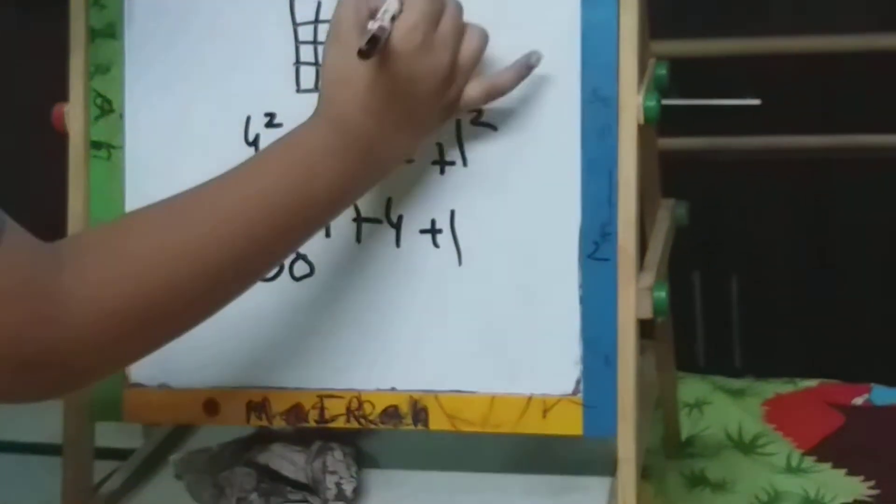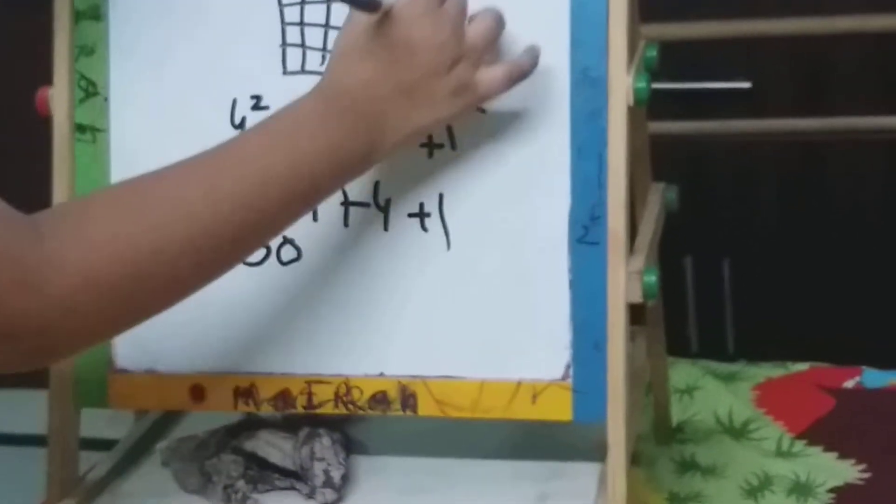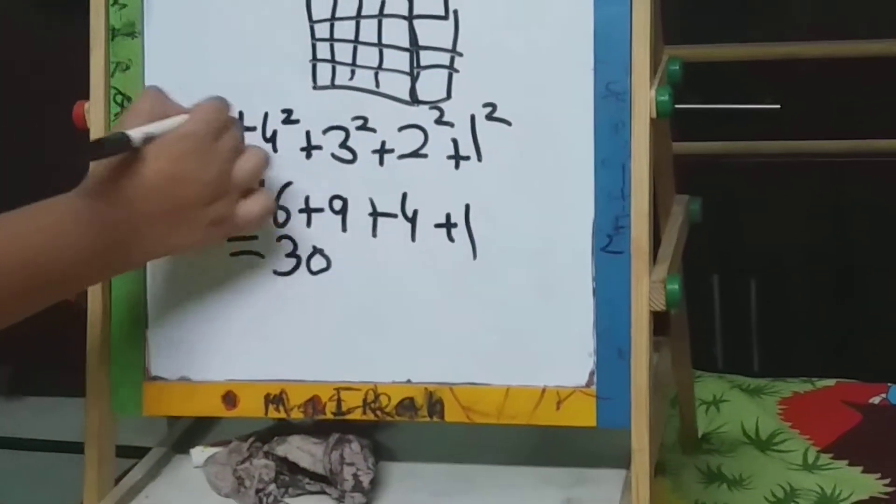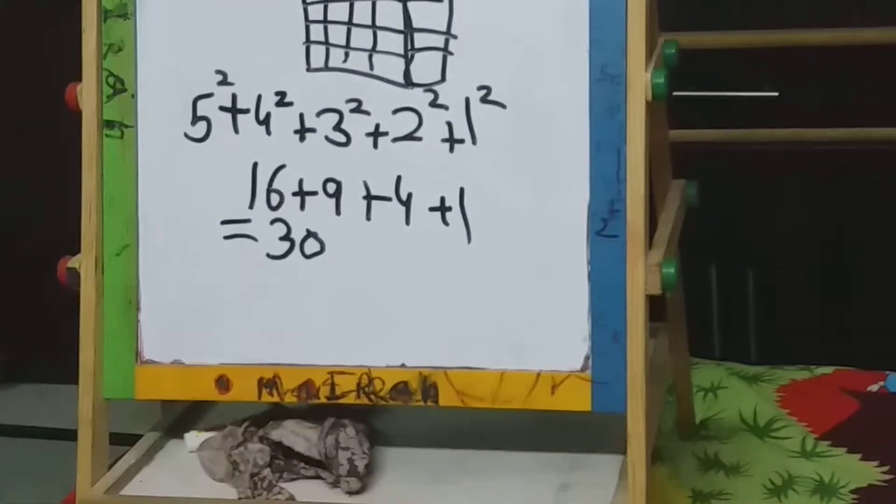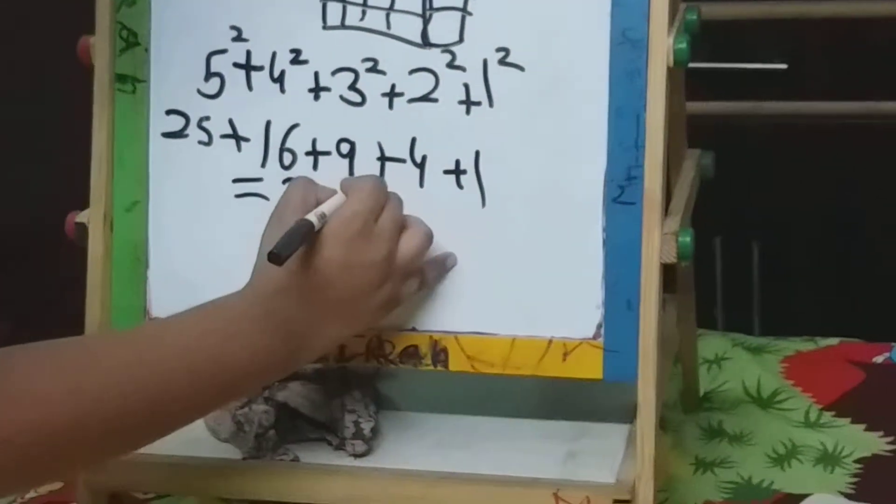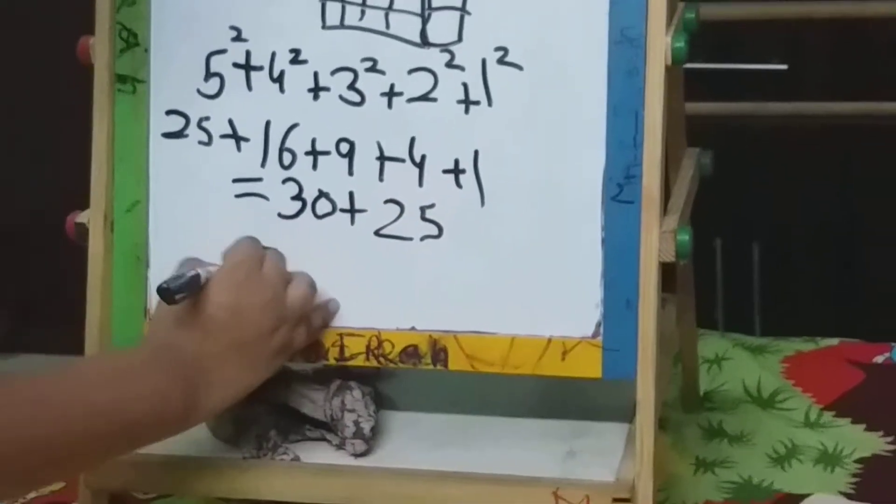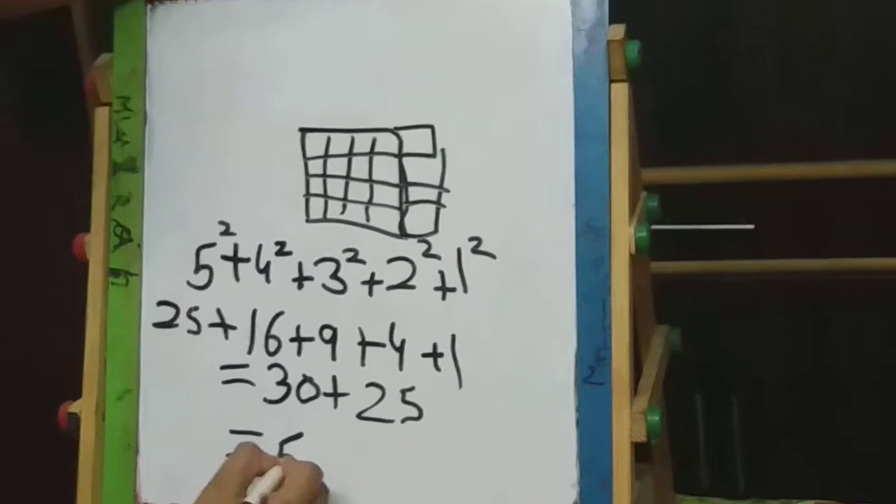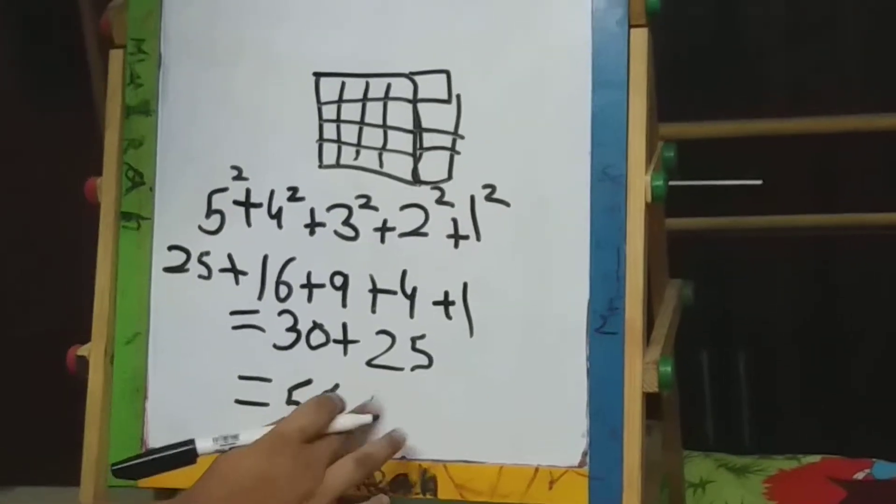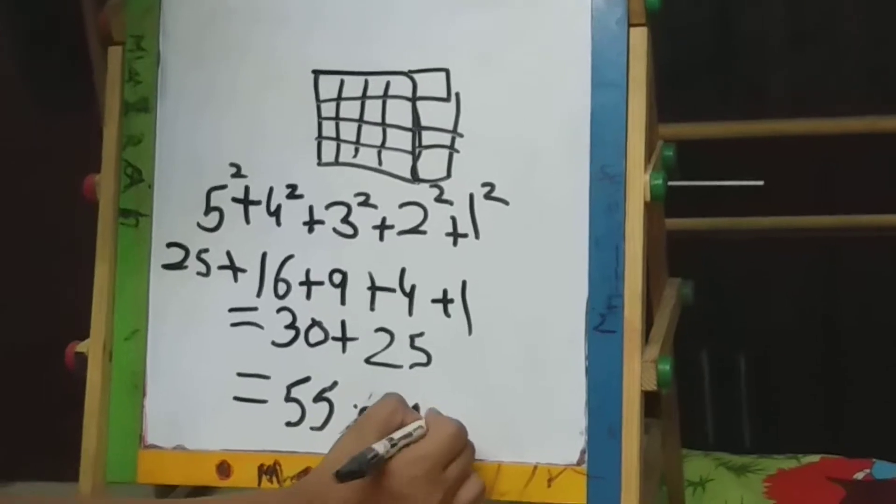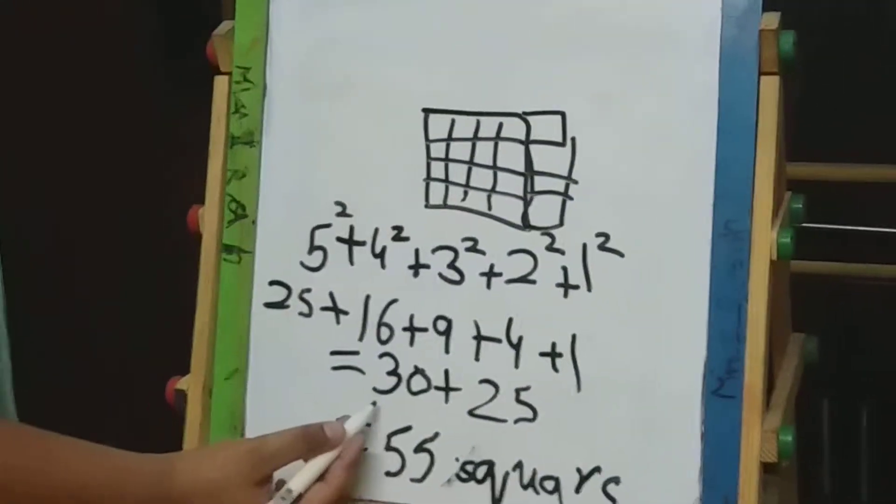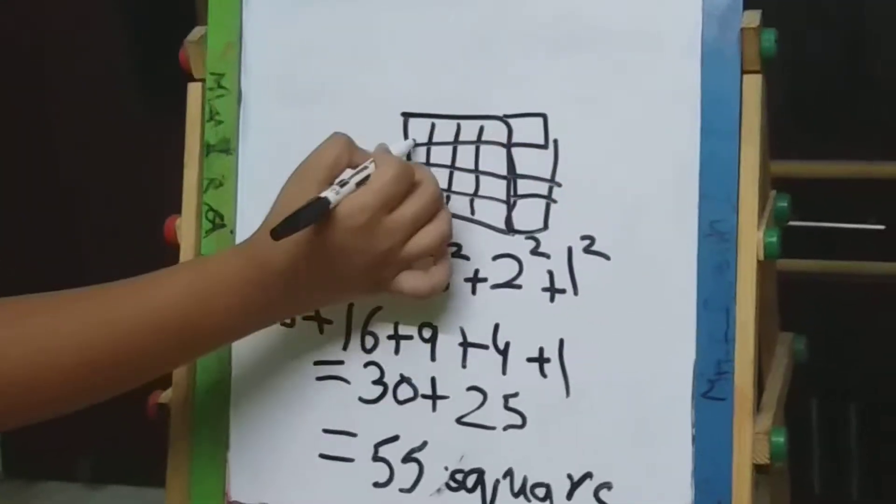If there were 5 boxes on each side, so it would be... I'm going to draw this. So the answer is 55 but I added 5 more to each.